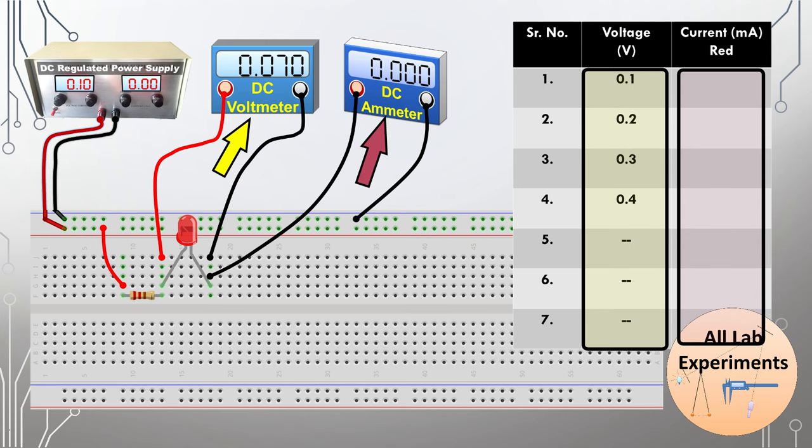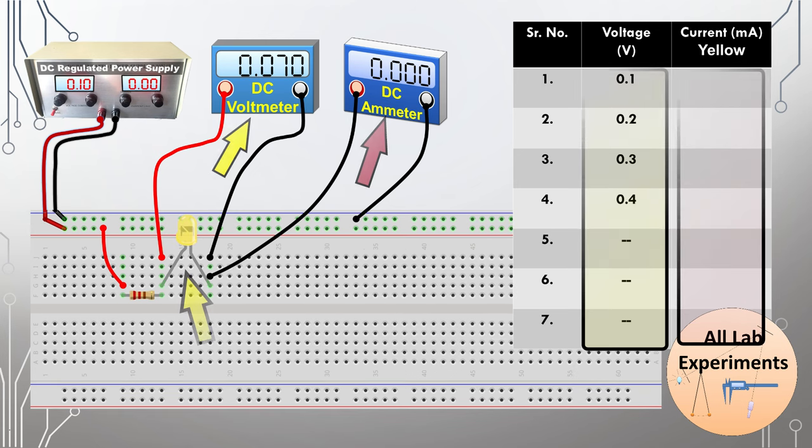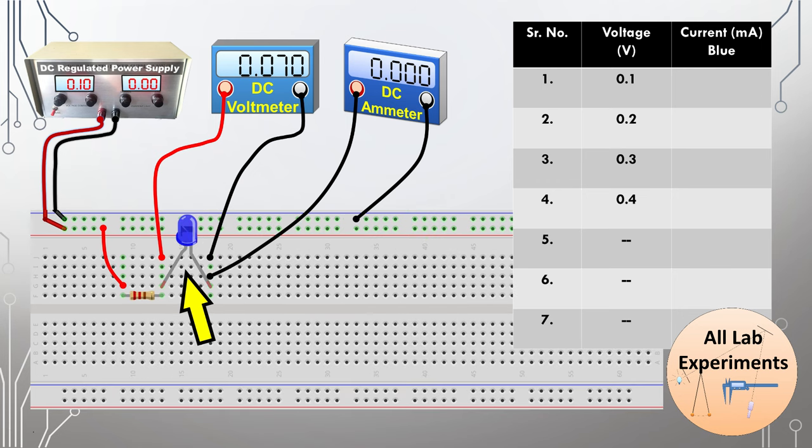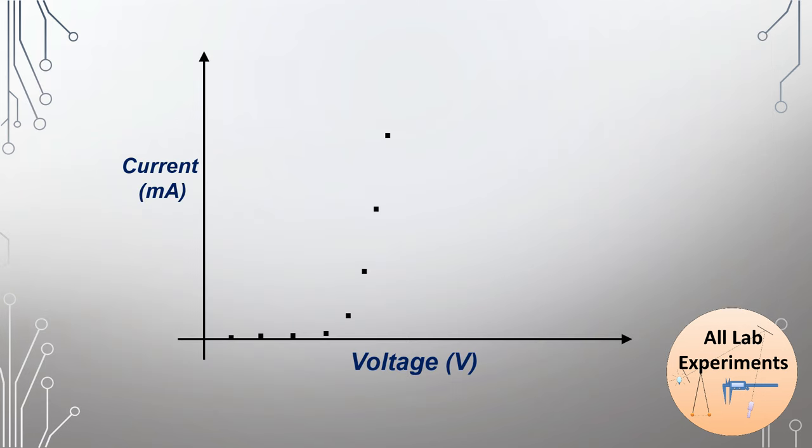Similarly, we will repeat these readings for the yellow, green, and blue LEDs. In this way, we have observed voltage-current readings for four different colored LEDs. Now we will plot their voltage and current characteristics in a graph. First is red, then yellow, then green, then blue.